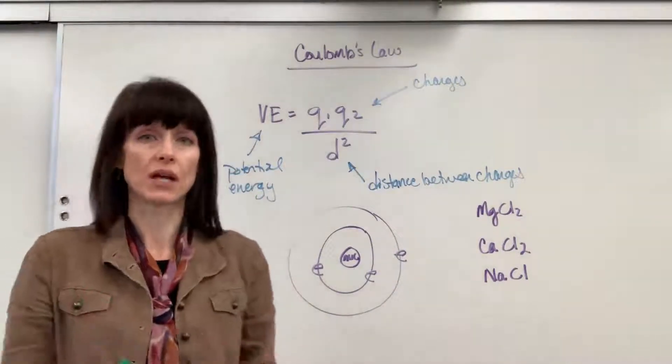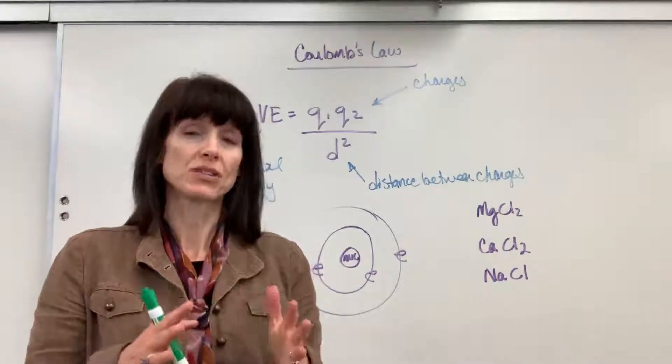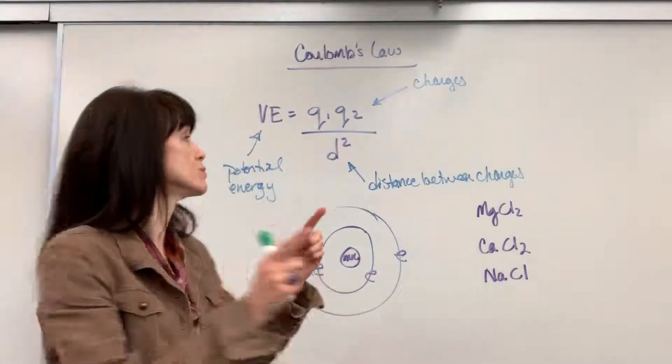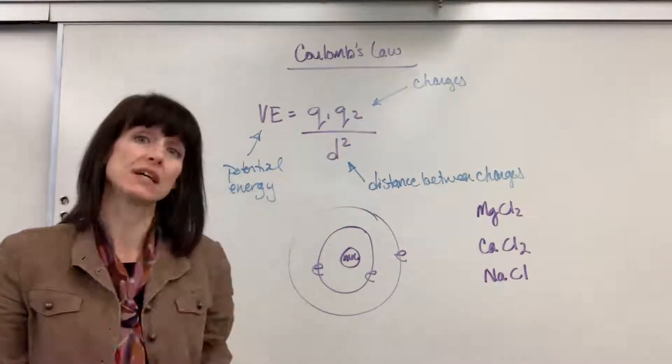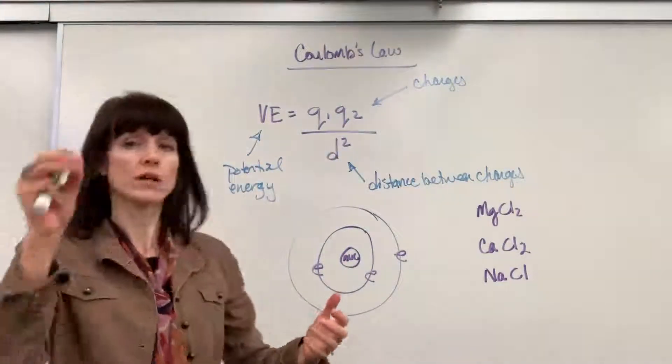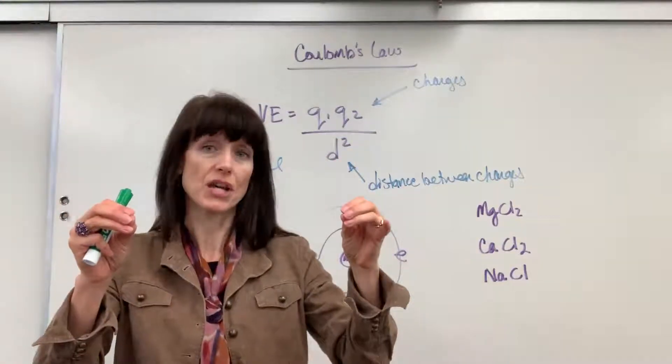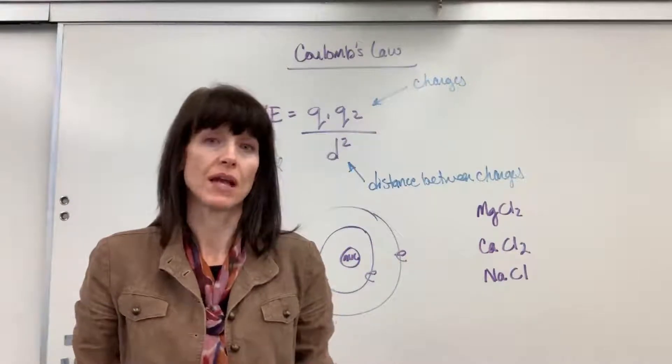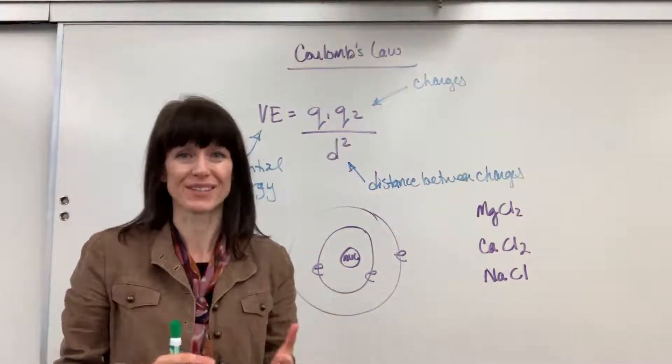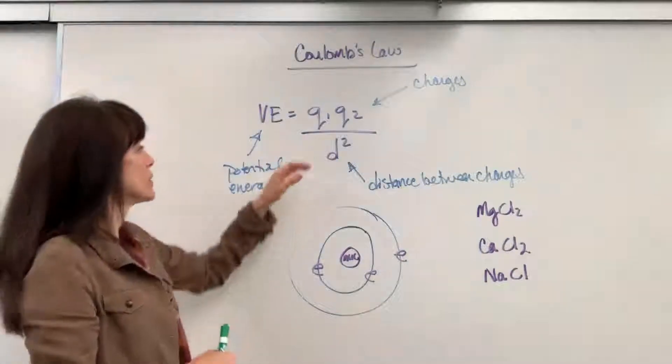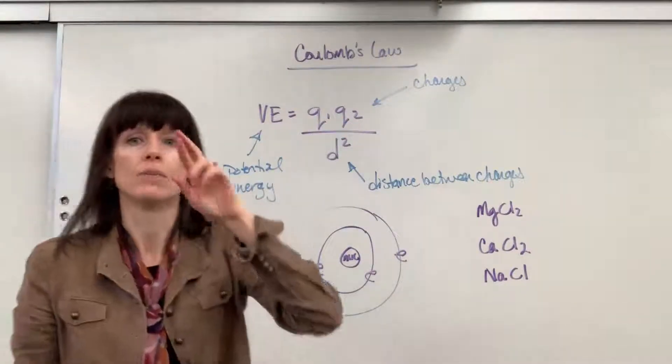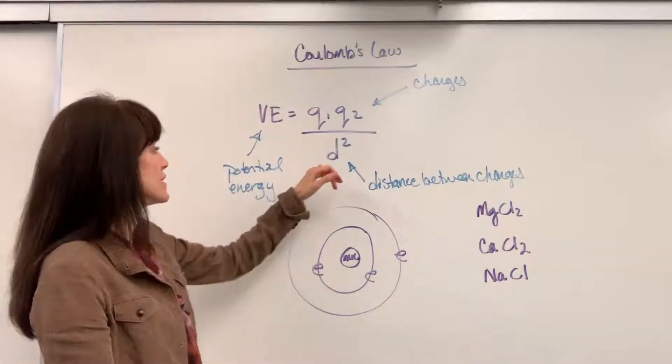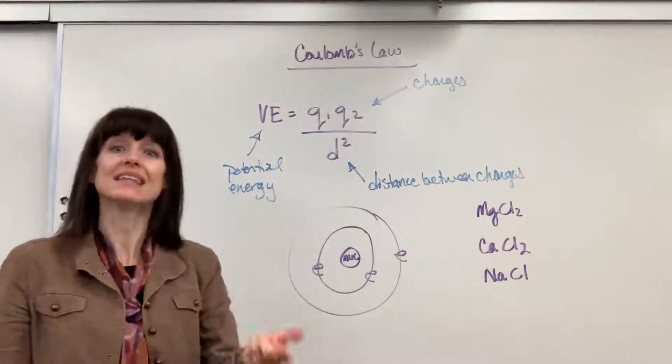VE is just the potential energy. And remember, potential energy is an energy of position. So it's the position of two charges relative to one another. Q stands for the charge. So you're going to have one charge compared to another charge. And it's the d, distance between those charges, that's going to relay our energy. Now mathematically, I want to look at this just a little bit. Notice that the charges multiply. Notice also that they are in the numerator. Now the d, the distance, is in the denominator.